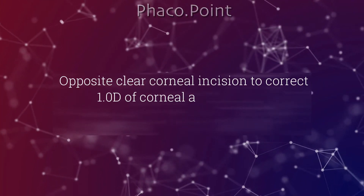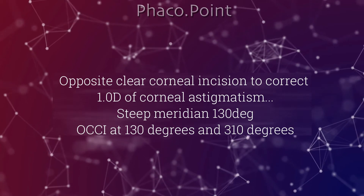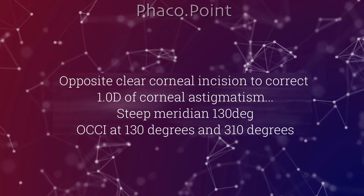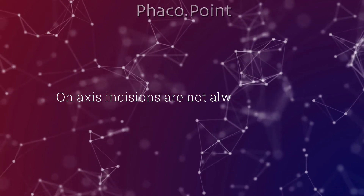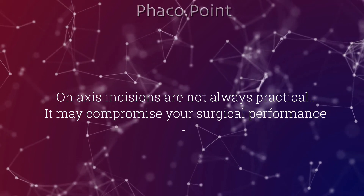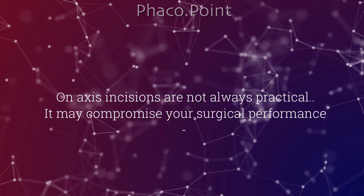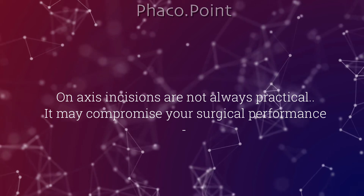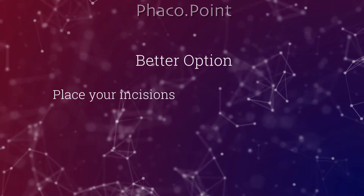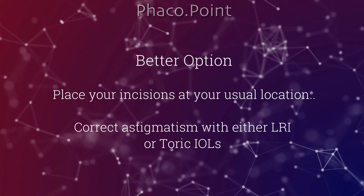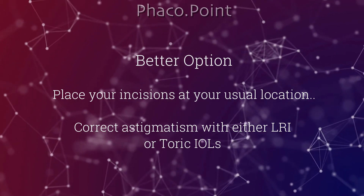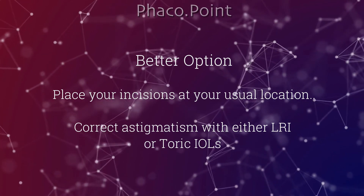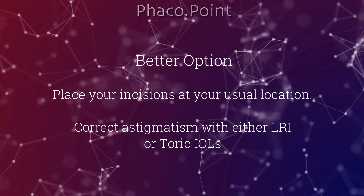For instance, if the corneal astigmatism of one diopter is in the 130-degree meridian, two clear corneal incisions are made at 130 and 310 degrees. However, it may not always be practical to place on-axis incisions as this may compromise surgical comfort. Hence it seems a good idea to comfortably place the clear corneal incision at your usual location and then combat astigmatism either with limbal relaxing cuts for smaller amounts, or to simply implant a toric intraocular lens.